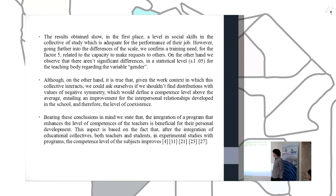Although, on the other hand, it is true that given the work context in which this collective interacts, we could ask ourselves if we shouldn't find distributions with values of negative symmetry, which would define a competence level above the average, entailing an improvement of the interpersonal relationships, developing the school, and therefore the level of coexistence.